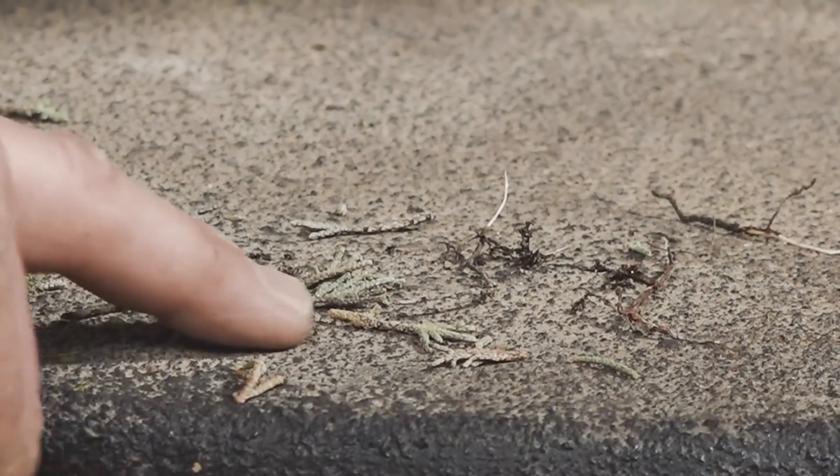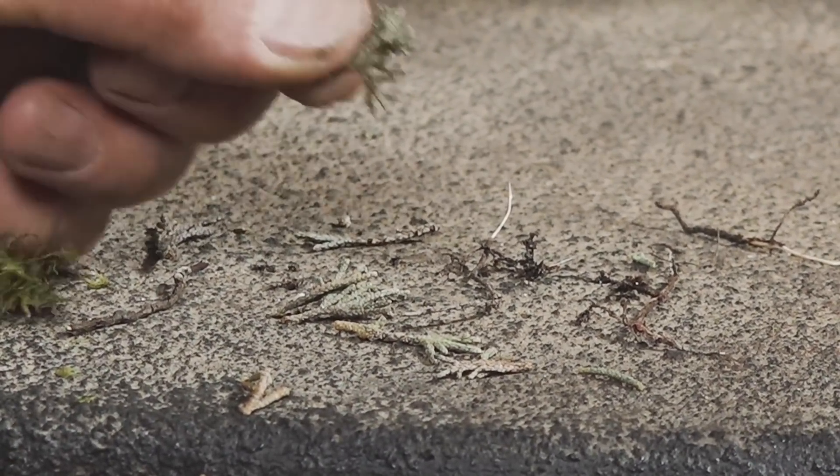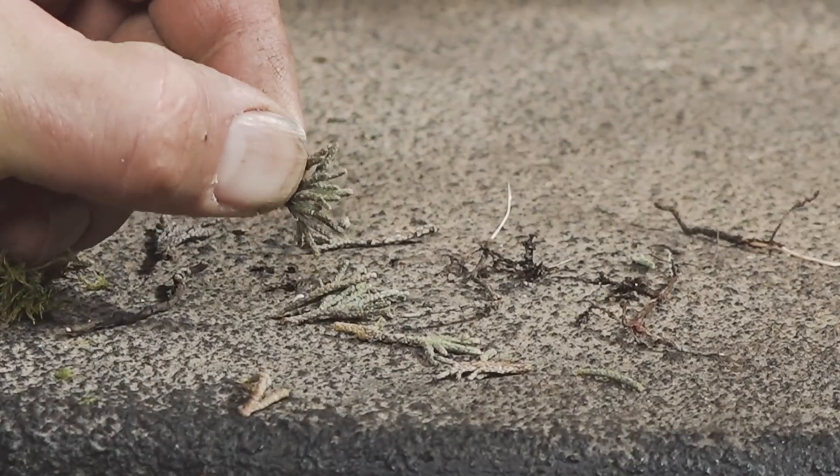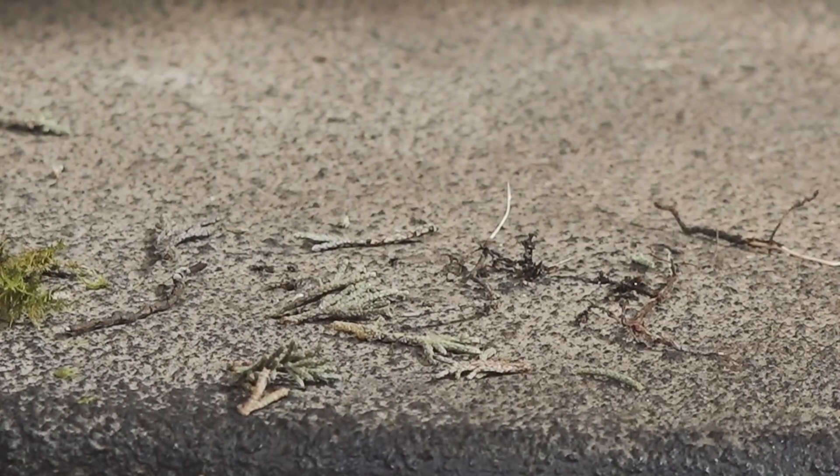But when we see active green pieces falling off of our tree, notice we have color here. We have photosynthesis taking place. This is not a piece that should be falling off. The loss of foliage right now, not a normal thing.